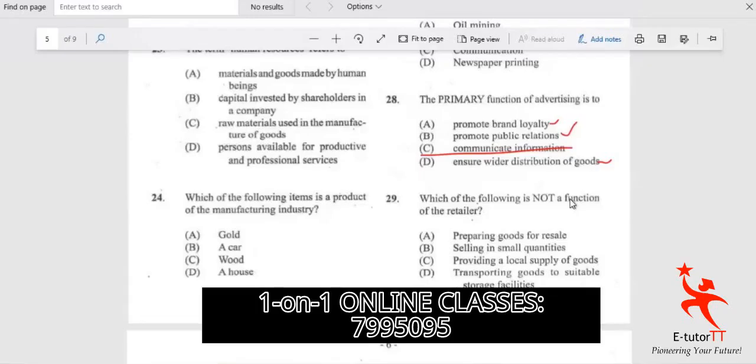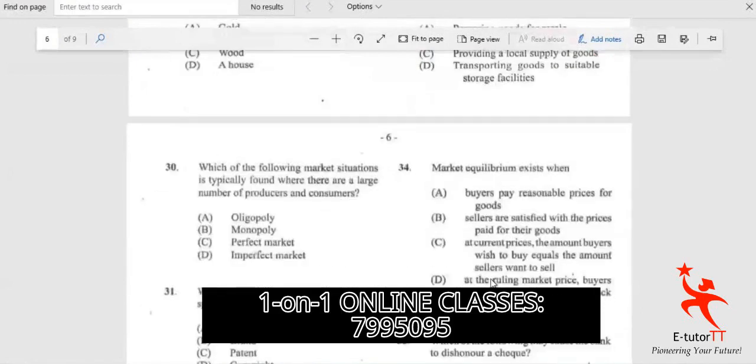In Tutor TT, Pioneering Your Future, we have Question 33. Which of the following markets typically has a large number of producers and consumers?